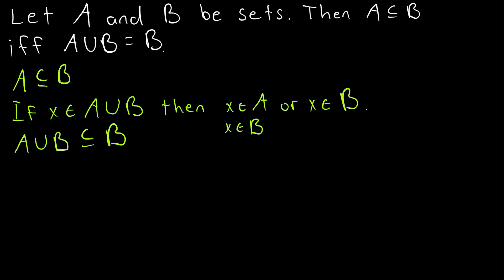Then, to finish this direction of the proof, we just need to show that B is a subset of A union B. So if we take some element x from the set B, then simply by definition of union, x must be an element of A union B, because A union B contains all elements that are in A, as well as the elements that are in B. Therefore, B is a subset of A union B. Since A union B is a subset of B as well, we have our desired conclusion. A union B is equal to B.